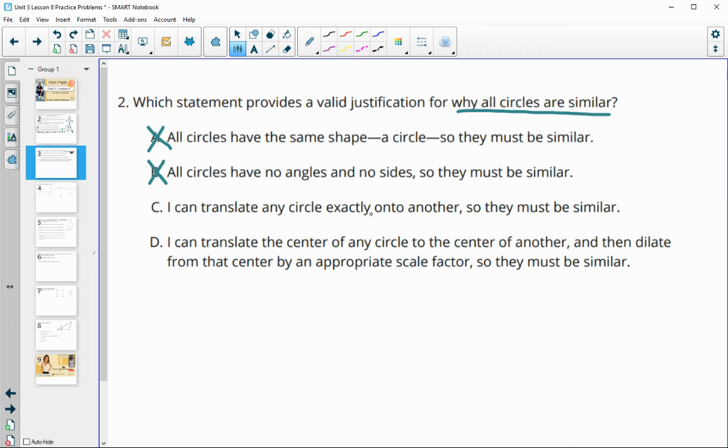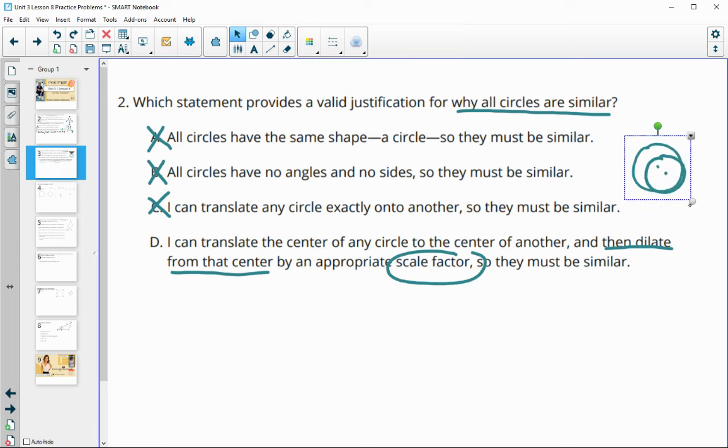C, I can translate any circle exactly onto the other, so they must be similar. That's not true. I mean, because if we're going to translate, here's one circle, here's another circle. Translating this circle on top of that one doesn't land them on top of each other or get them the same size, so that one's not going to work. I can translate the center of any circle onto the center of another. That's what I did here. Then I can dilate from the center by an appropriate scale factor, so they must be similar. So that would be true because we can take the new radius divided by the current radius, and we would be able to get every circle to dilate to the same size, so D.